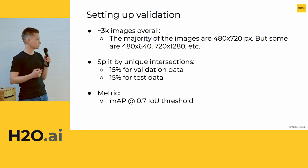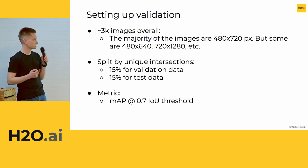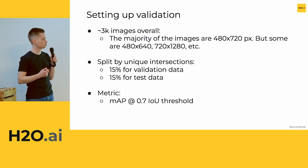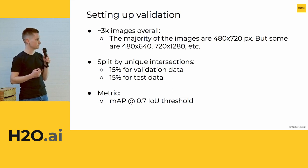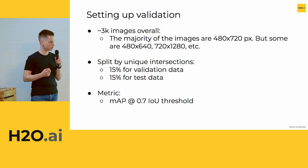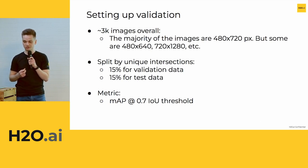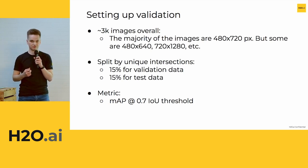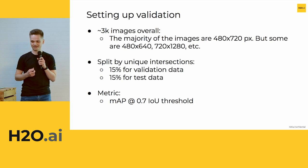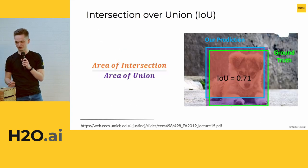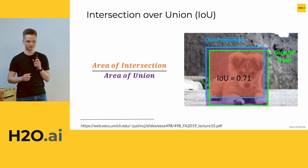This particular dataset is pretty small with only 3,000 images, with a majority at 480 by 720 pixels resolution. The metric we're trying to optimize is called Mean Average Precision at 0.7 IOU threshold. It's a bit cryptic, but we'll talk about it in detail.